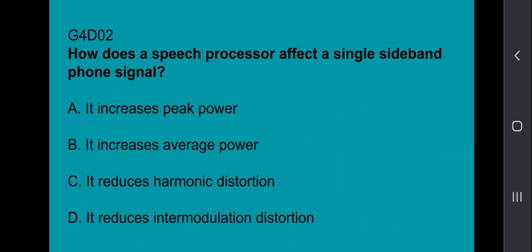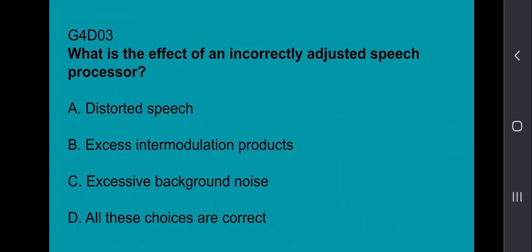G4D02, how does the speech processor affect a single sideband phone signal? It increases average power. G4D03, what is the effect of an incorrectly adjusted speech processor? It's all of the above, so you get distorted speech, excessive intermodulation products, and excessive background noise.